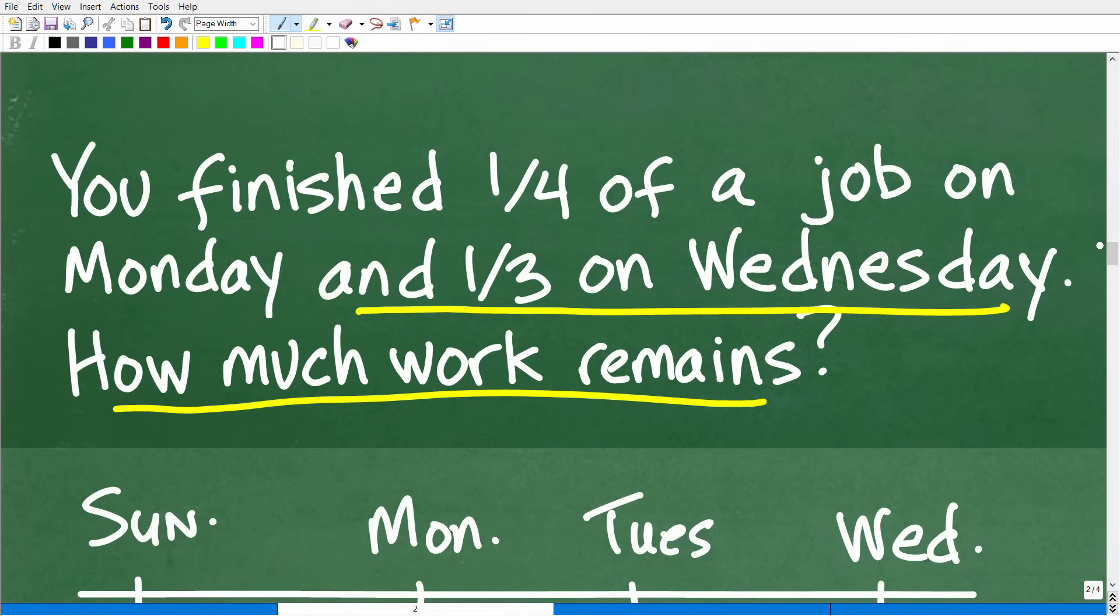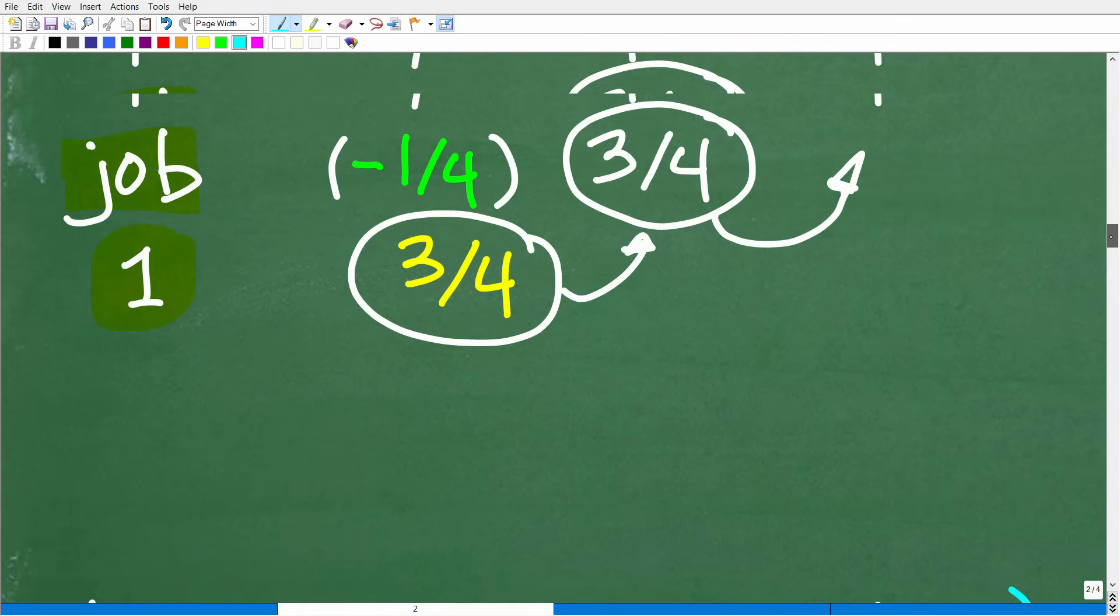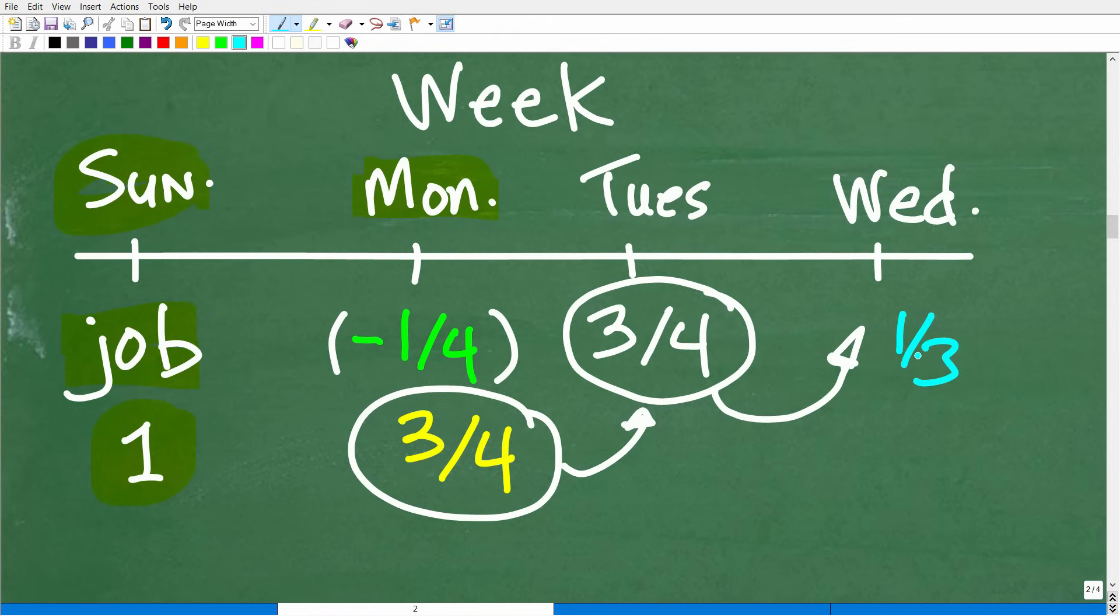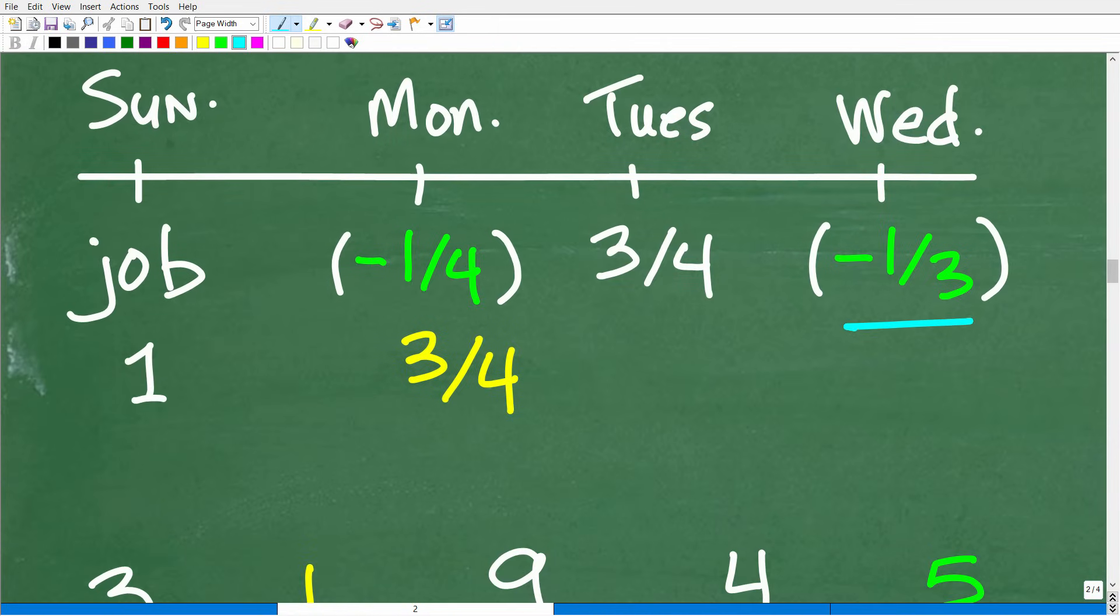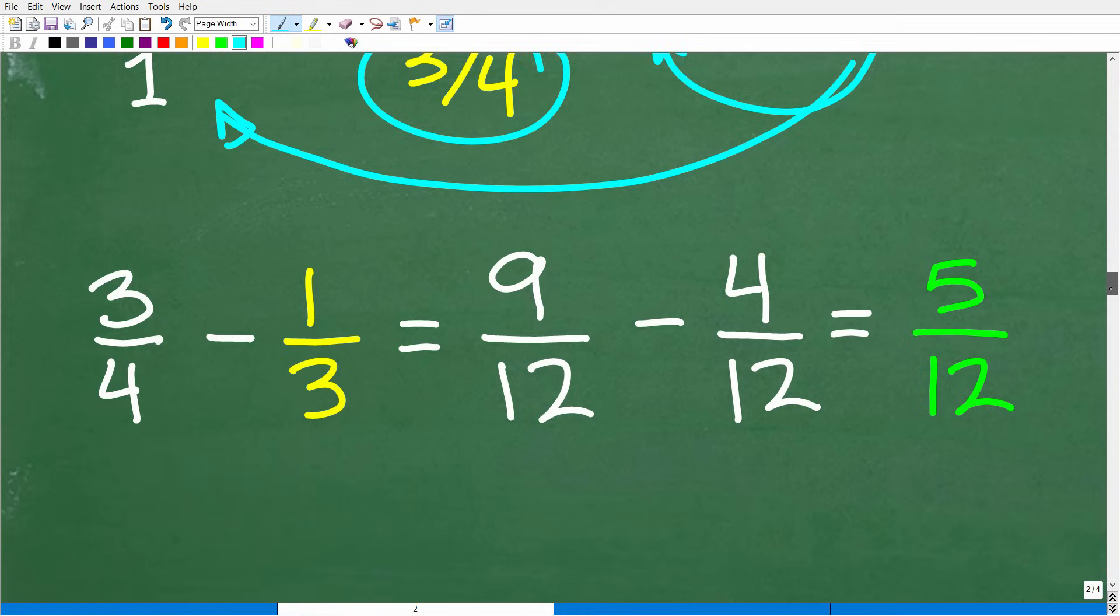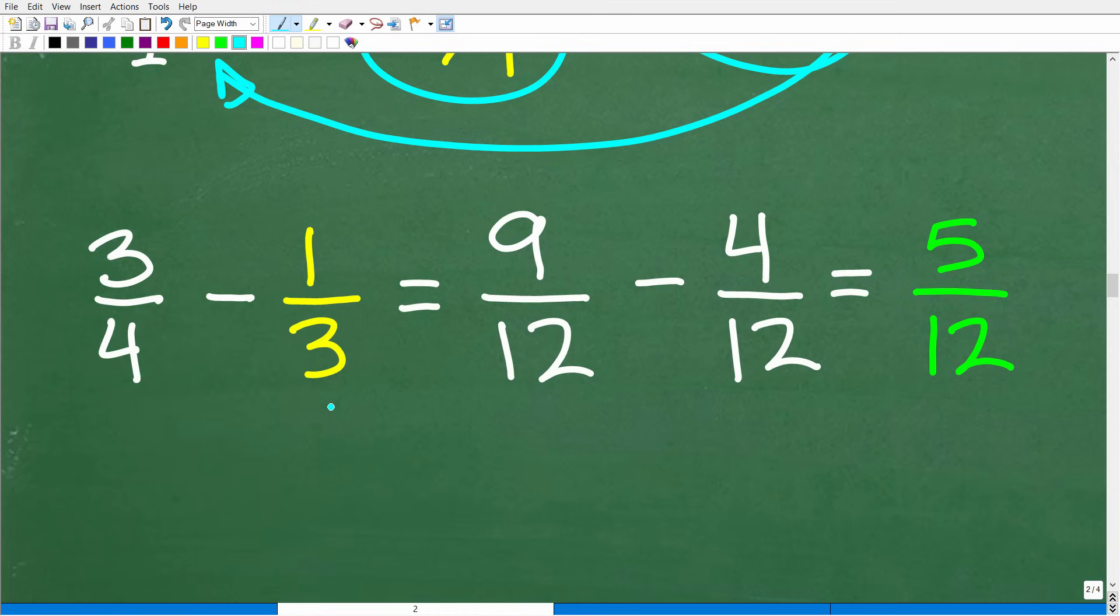So how much work are we going to do on Wednesday? Well, that's what the problem has indicated. And this is why you want to read the problem multiple times, just to figure out your game plan and not to try to do all the work at once. So we've got to take a look at the rest of this problem and it says you did one third of the job on Wednesday. So I'll just read it again from the beginning. You finished one fourth of job on Monday. We just took care of that and one third on Wednesday. So we go up here and we know, all right, on Wednesday, I'm going to do one third more work. Now you could see that one third is not going to be enough to complete the job. So there's going to be work remaining. How much work remains? Well, we have to subtract one third from what? We're not going to subtract it from one because we already did some work. We're going to subtract that one third from three fourths.